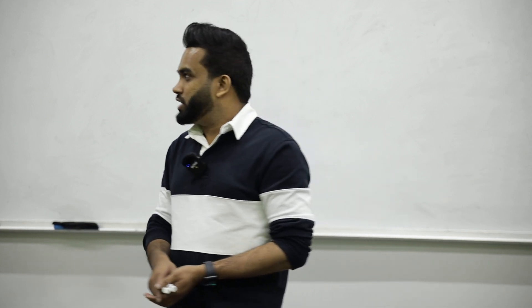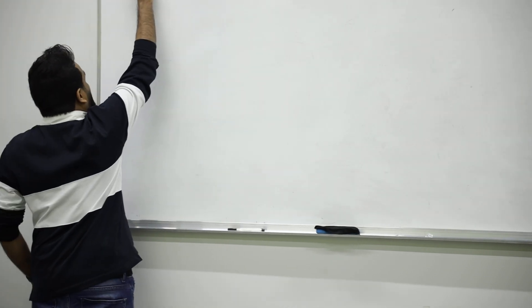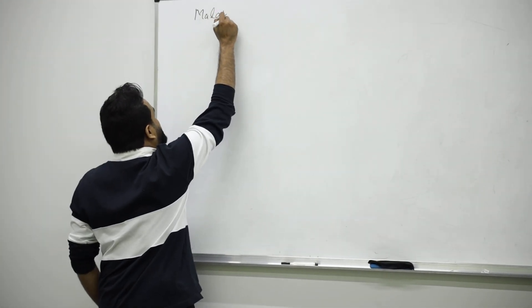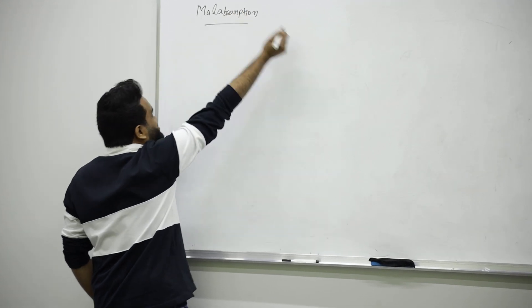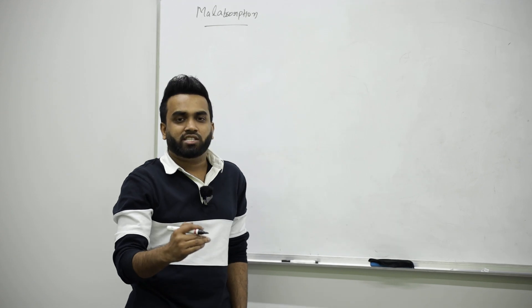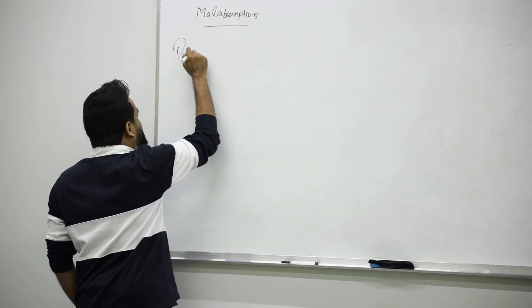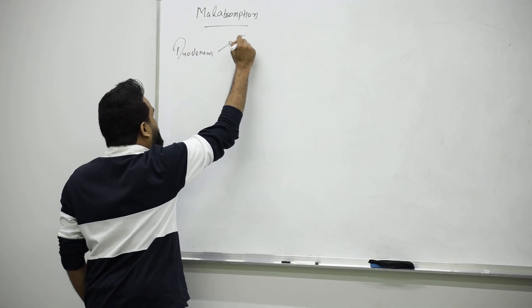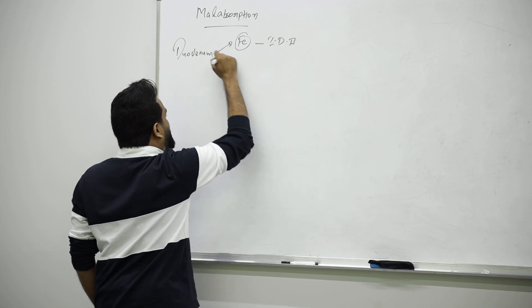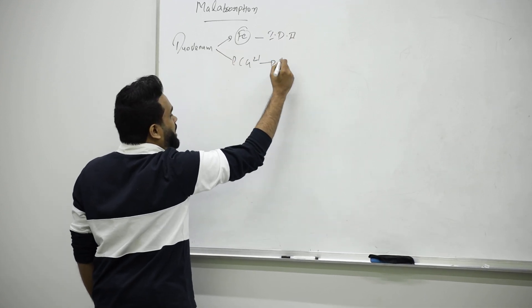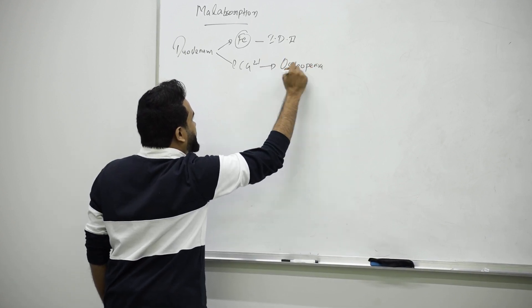Hello dears, next we are going to talk about something called malabsorption. You know malabsorption means something is not absorbed. The small intestine is the main part of absorption. The proximal part of the duodenum will be absorbing iron, so any damage there will cause iron deficiency anemia. They'll be absorbing calcium, so if any damage there we will have osteopenia or osteoporosis problems in the bone.